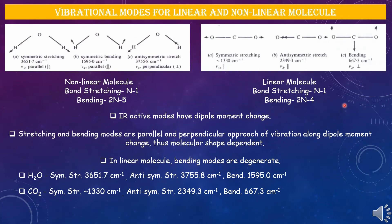Now we discuss vibrational modes for linear and nonlinear polyatomic molecules. In both linear and nonlinear n-atomic acyclic molecular cases, n−1 vibrations are bond stretching motions, and the other 2n−4 and 2n−5 are bending motions for linear and nonlinear molecules, respectively. For a diatomic molecule, which is always linear, only one fundamental vibration mode is observed: bond stretching.